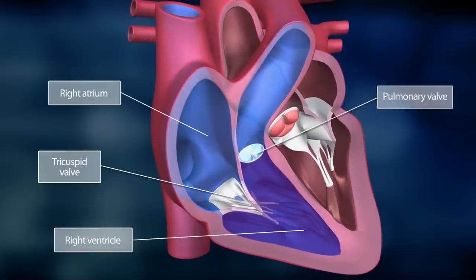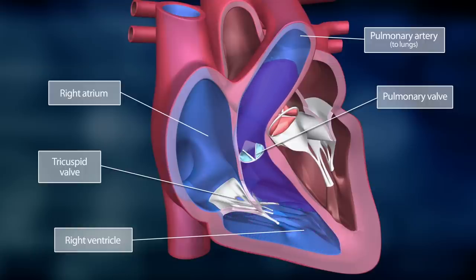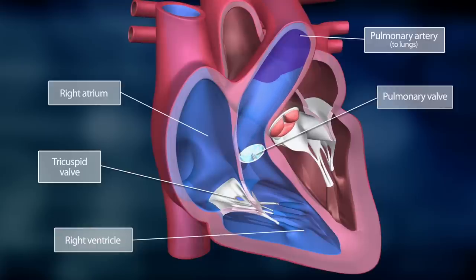The pulmonary valve opens and blood is pumped through the pulmonary artery into the lung, where it is enriched with oxygen. This phase is called ventricular systole. After this, the pulmonary valve closes quickly, preventing blood from flowing back into the right ventricle.